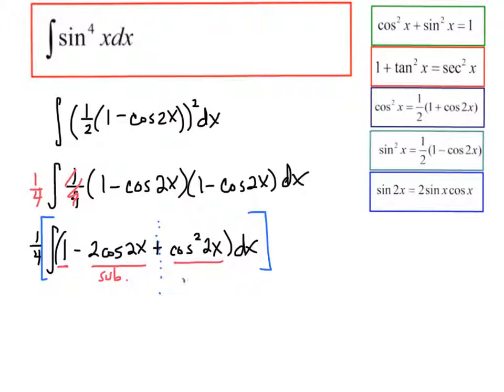But this integral, we could rewrite the cosine squared of two x as one-half, one plus cosine. Now, instead of two x, of course, it will be four x. Because we weren't doing the cosine squared of x, we're just doing the cosine squared of two x. So then I'd pull that one-half up front, like that. And again, then this would be just a normal integral, and this one I'd use substitution.